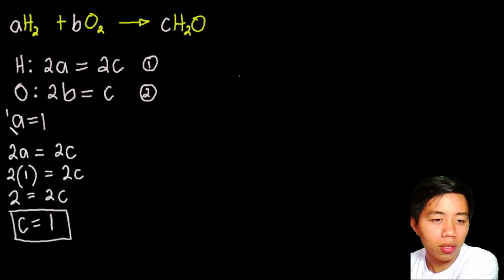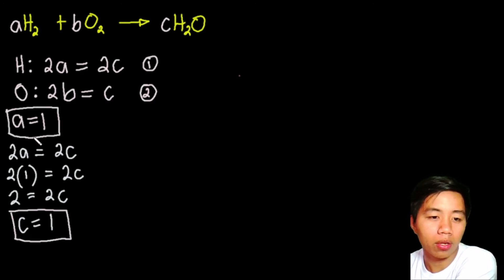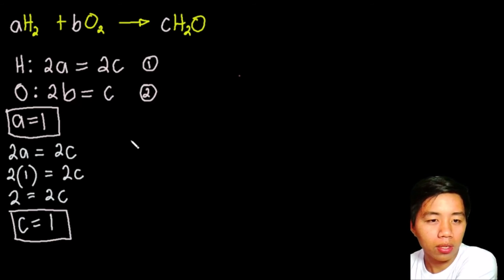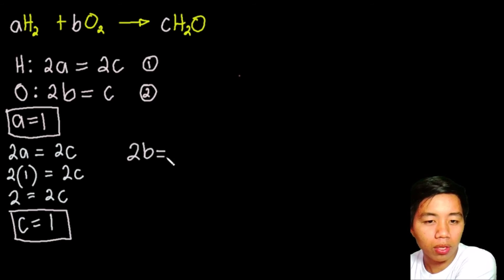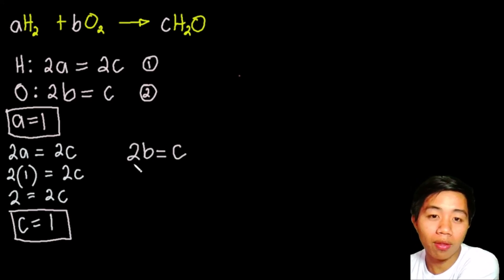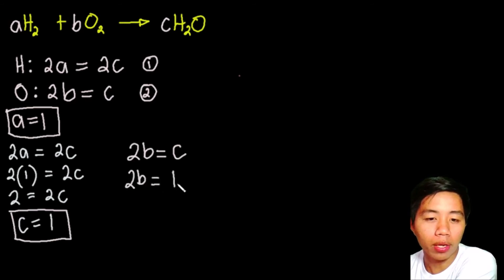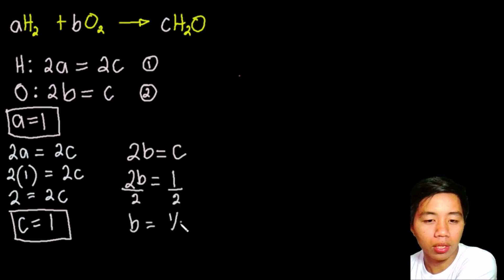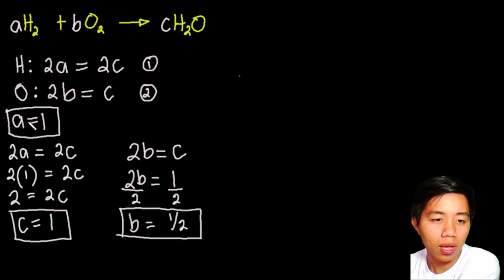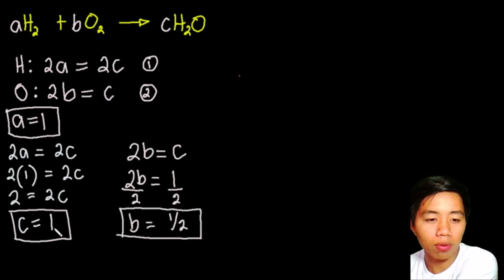So we have A equals 1 and C equals 1. The remaining unknown is letter B, so we use equation number 2. We rewrite equation number 2 as 2B equals C. We know that C equals 1, so we substitute: 2B equals 1. Dividing both sides by 2, B equals 1 half.